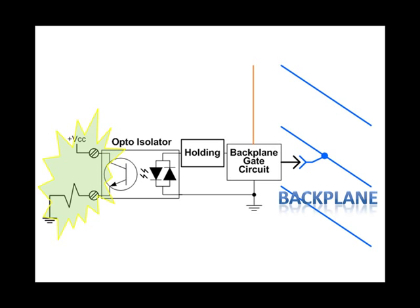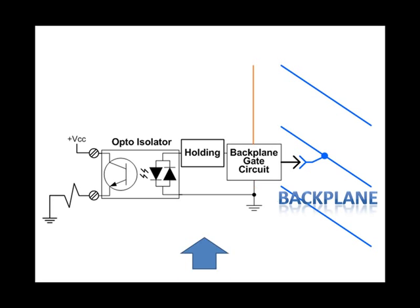The circuitry of a single point of output includes the backplane gate circuit, which connects or disconnects this circuit from the backplane by way of a signal from the processor. A holding circuit, which maintains the last state sent from the processor by way of the backplane, the opto-isolator that isolates the field power source from the I/O module's power supply, and then the output device itself.